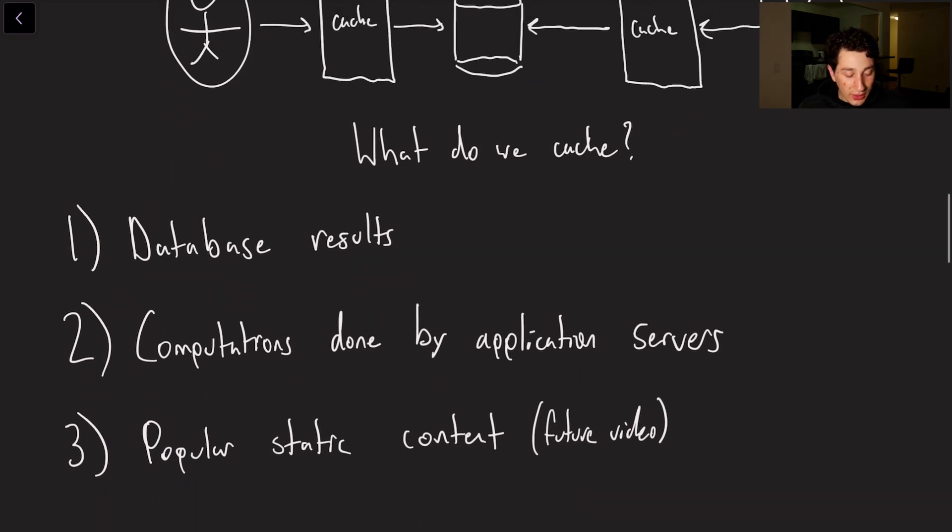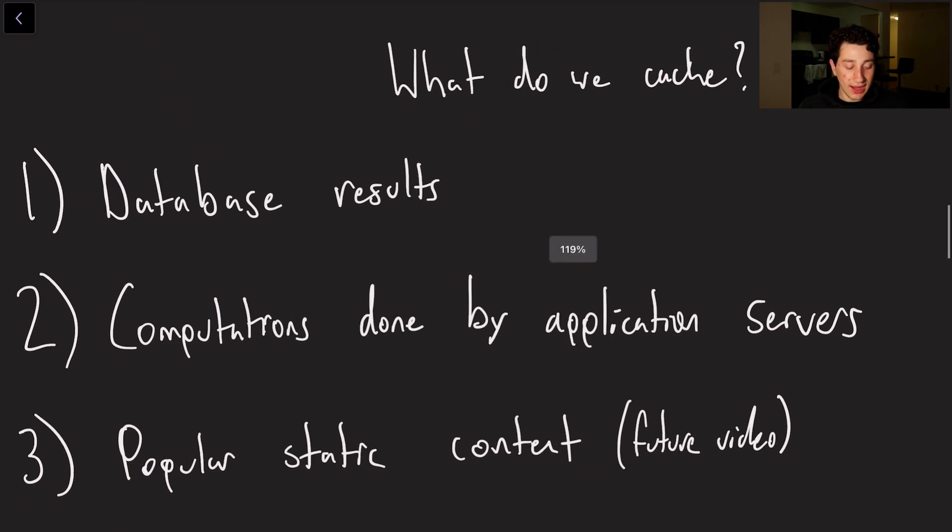Okay so the next question that we're actually going to quickly attempt to answer is what do we cache? And this one should be pretty simple if you start to think about it but the gist is any form of computation or anything that could be remotely expensive to do or load or read, so that could be database results you know if we have a big query to a table and we know that we're going to be reusing that many times over that would be great to cache.